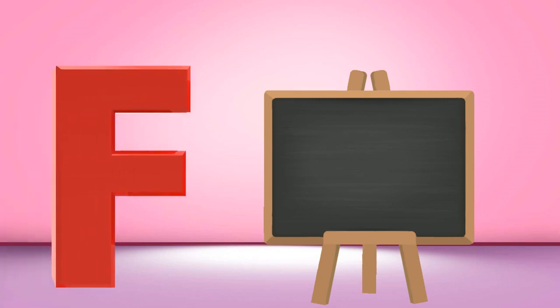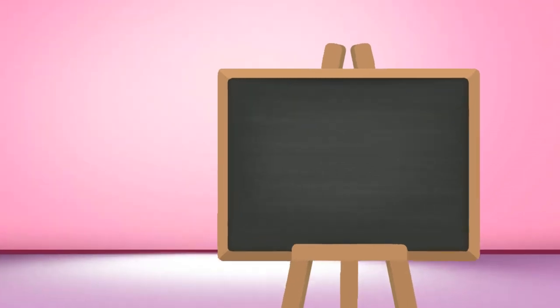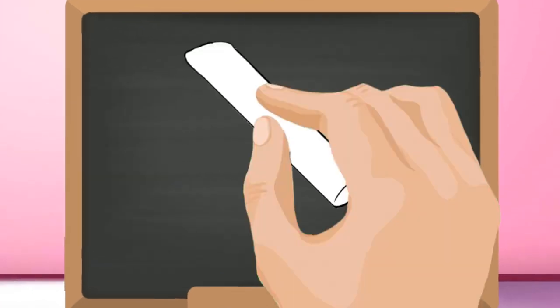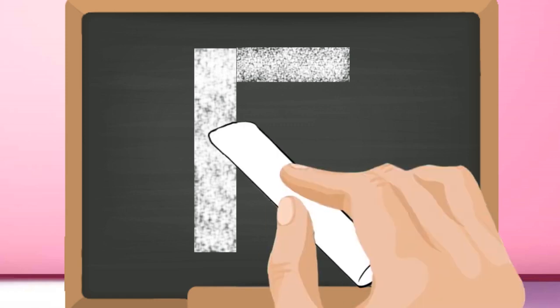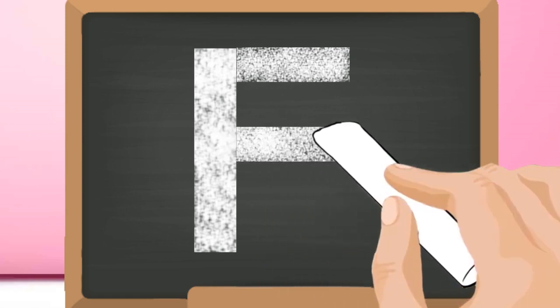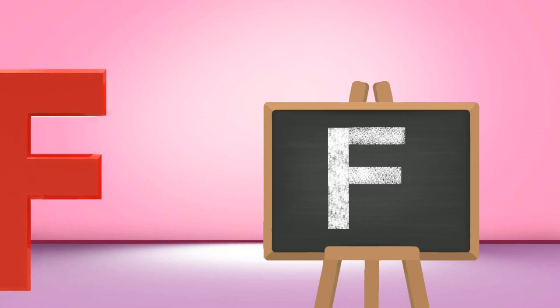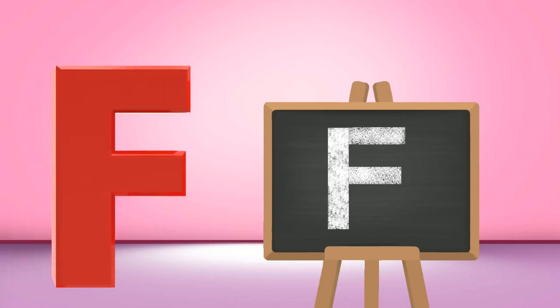F, capital F. Start from the top and draw a standing line down. Go again to the top and draw one slanting line to the right. Then go to the middle and make another line in the same way. Capital F.